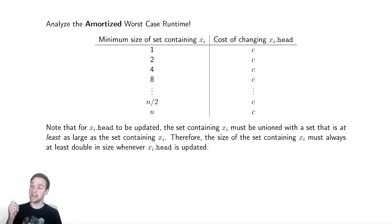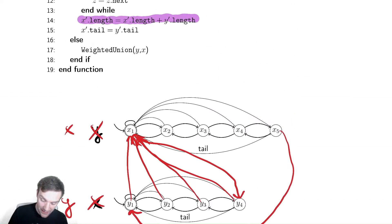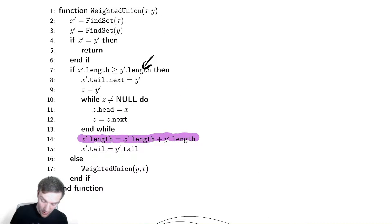We're going to do this by looking at the amortized runtime. We are going to analyze how many times the pointer for xi.head is going to be updated. In our code, xi.head is updated only once inside of this while loop for a particular node. I only update it once.